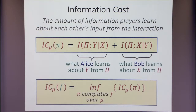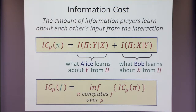We can also define the information cost of a function: it's the information cost of the cheapest protocol that computes the function over the measure. We go over all protocols and look for the one that minimizes the information cost.